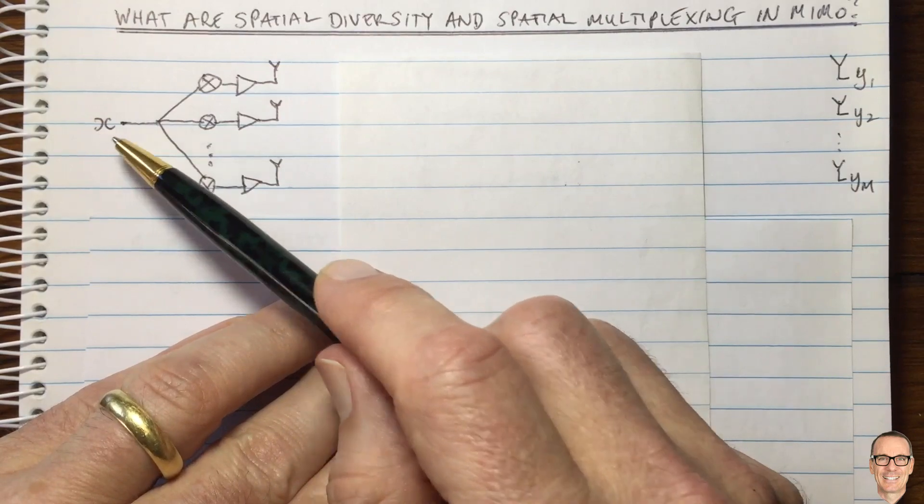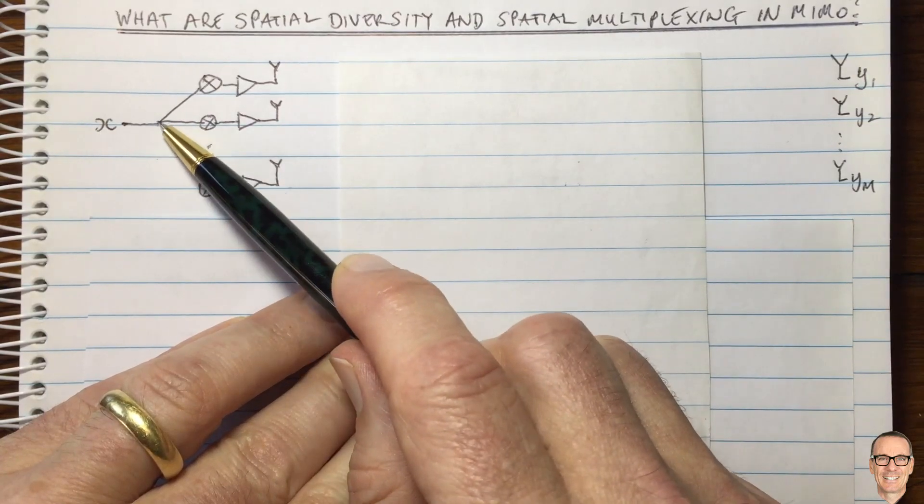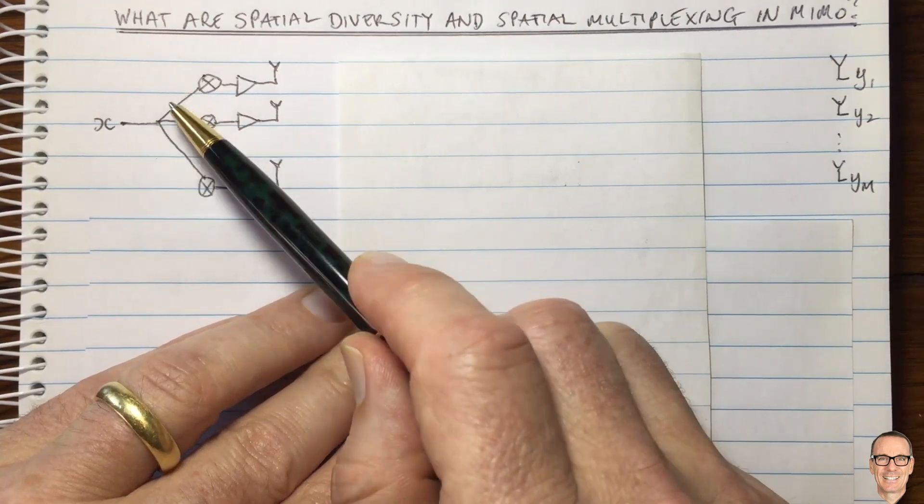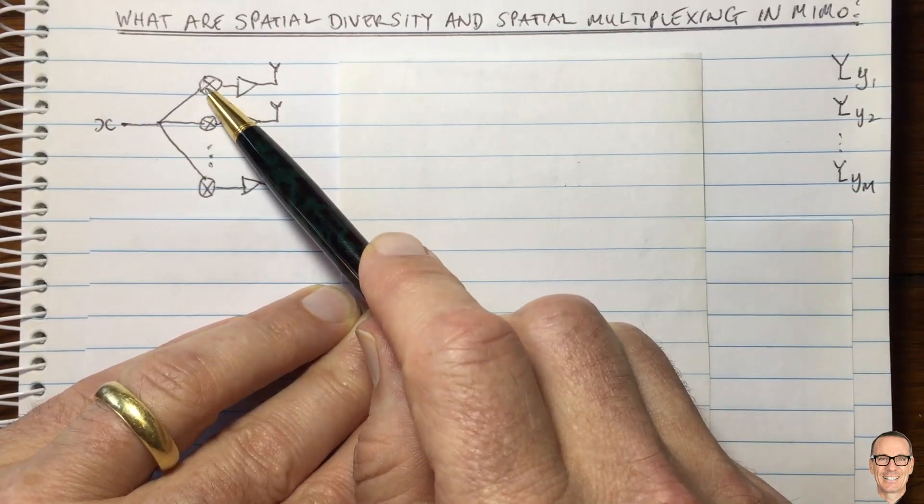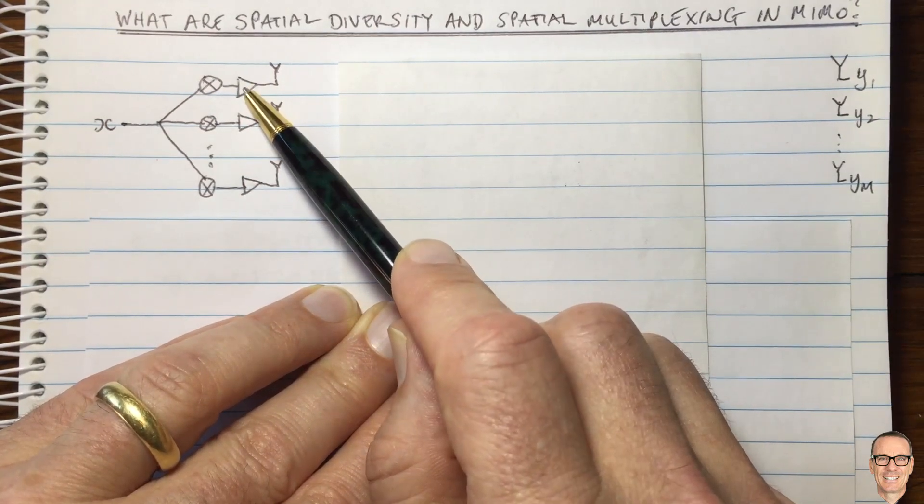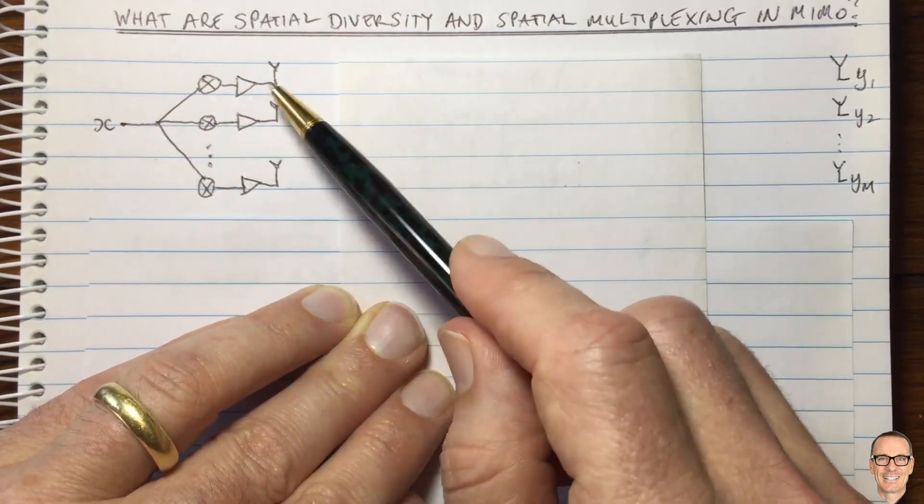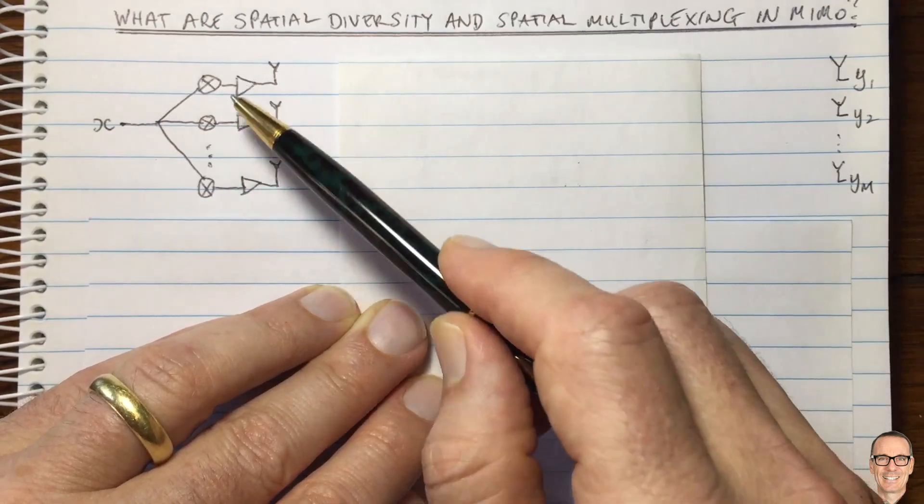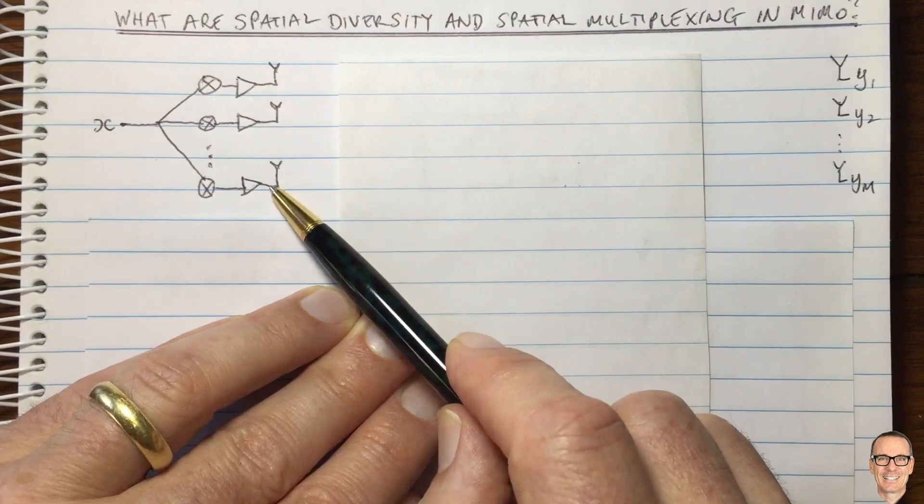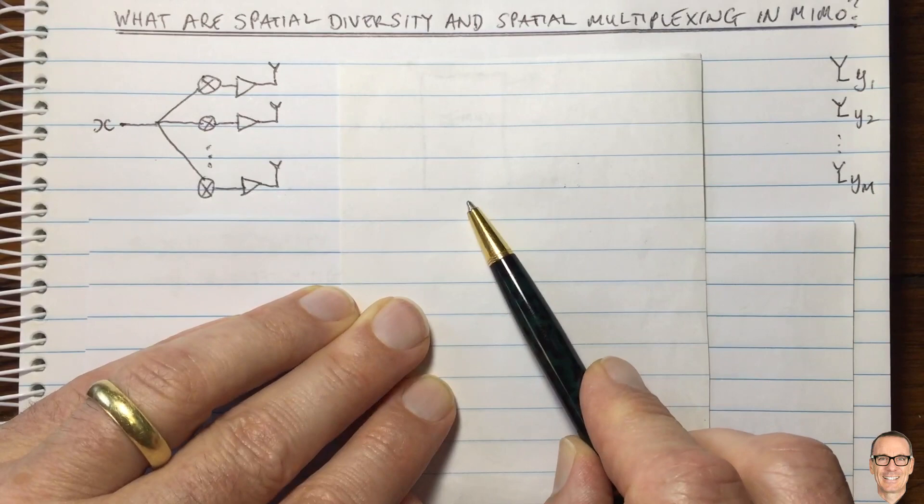One thing we could do using these antennas is to take our input data symbol X and send copies of it on each of the transmit antennas. Now we might modify those copies by changing the phase and giving it a different amplitude from the amplifier, but essentially the same symbol is being sent in this case on each of the transmit antennas, just with a different amplitude and phase. This is one approach to using the multiple antennas in a transmitter in a MIMO, multiple input, multiple output communication system.